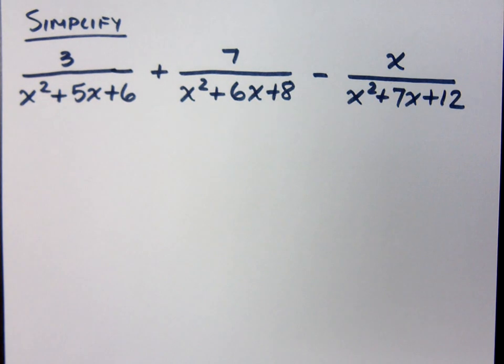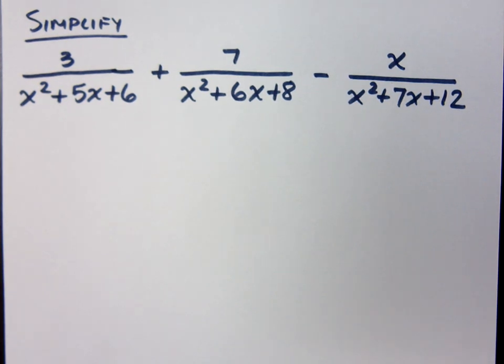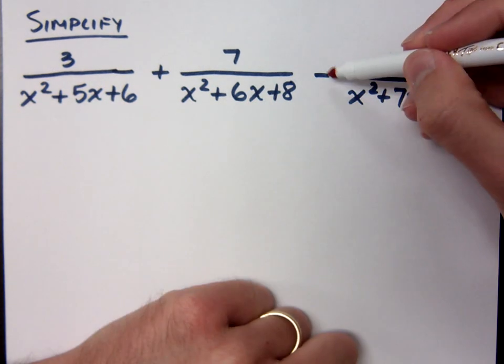All right, so let's check this guy out. We need to do some factoring. We need to be able to find a common denominator, but even before I do that, there is one thing I want to point out here so that we don't lose it while we're doing everything else, and it's this minus sign right here.